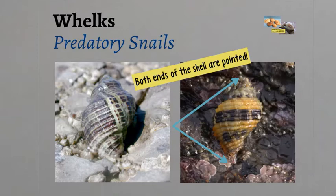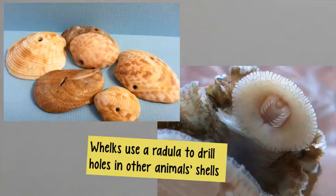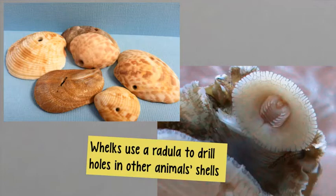Remember the turban snail we just talked about has a smooth, rounded shell with only one point. If you look closely, you can see these perfectly drilled holes in these clam shells. And on the right-hand side, you can actually see what that tongue-like appendage — which we call the radula — looks like in some whelk species. Some people may even say it looks alien-like.